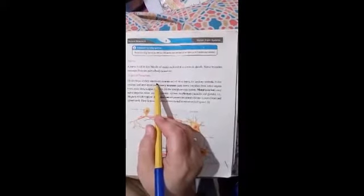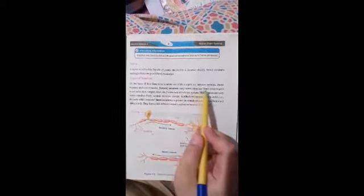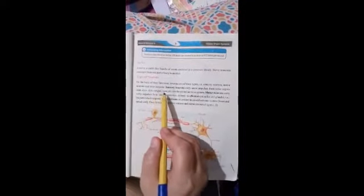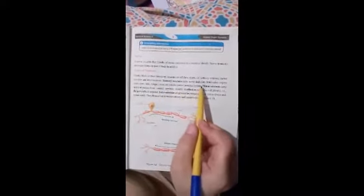For A sensory neuron, you have to start: sensory neurons carry nerve impulse from sense organs, eyes, ears, skin, tongue, nose, etc. to the central nervous system.